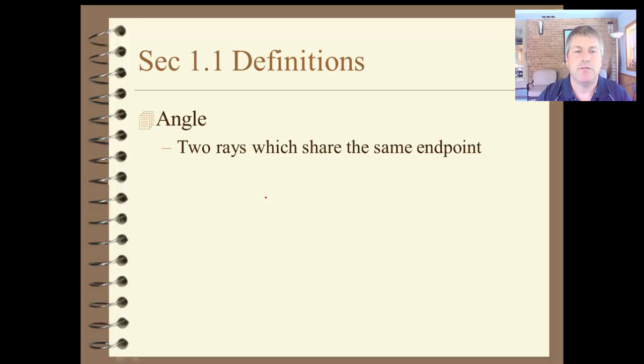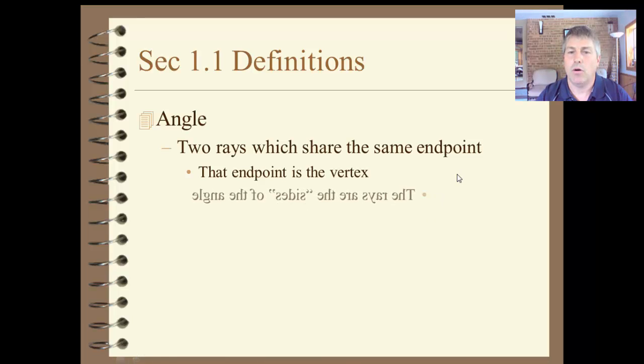An angle. An angle is defined as two rays which share the same endpoint. And that endpoint is the vertex. The vertex of the angle. And the rays make up the two sides of the angle. So I would have a ray that might extend out that way. Ray AB. And then I might have another ray that extends downward that way. Ray AC. And so our angle here, our vertex is at A. In this case it's A. And this would be our angle, made up of those two rays.